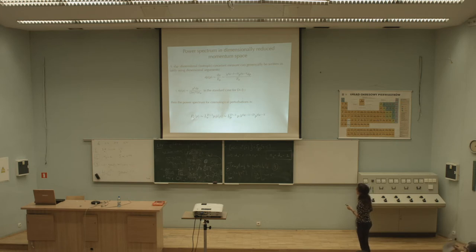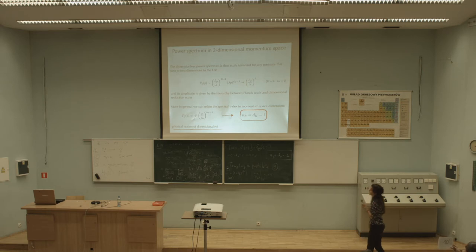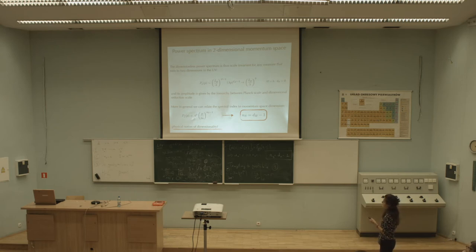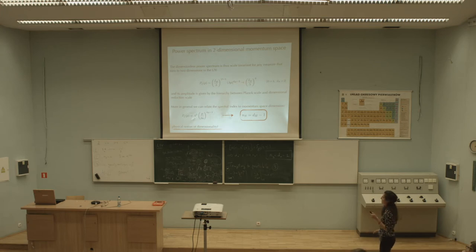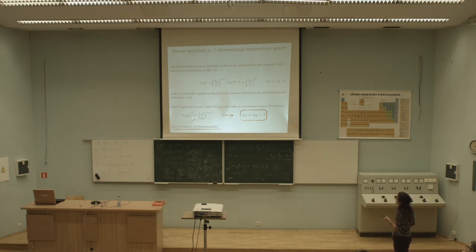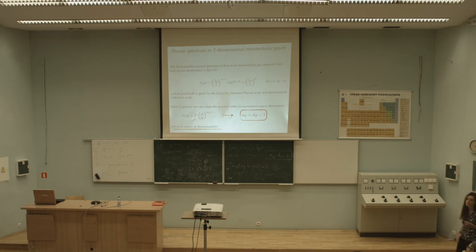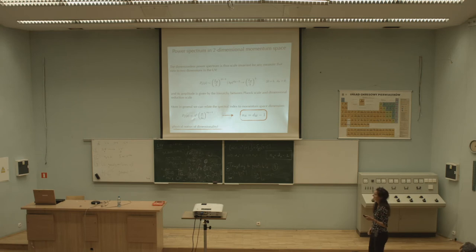The power spectrum in D_H dimensions is related to the Planck length, the quantum gravity length, and the spatial dimension of space-time at the classical level. Notably, when the dimension of the momentum space goes to two, the power spectrum becomes scale-invariant — recovering the result Joao was talking about. We also see how the hierarchy between the Planck scale and the quantum gravity scale appears naturally.